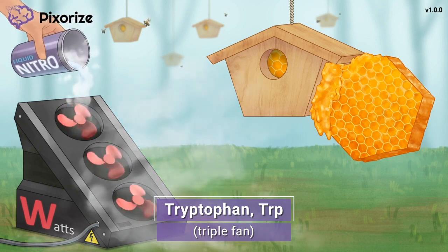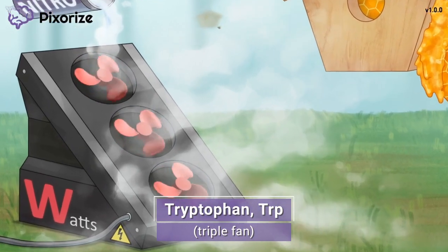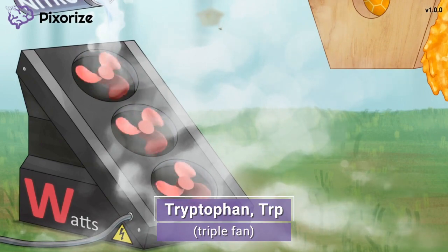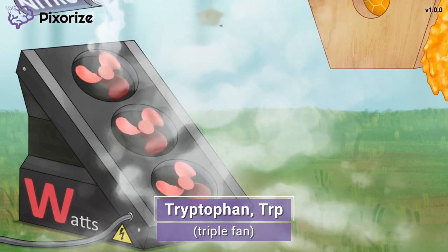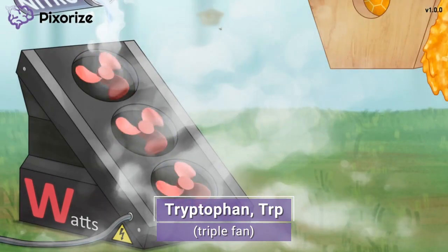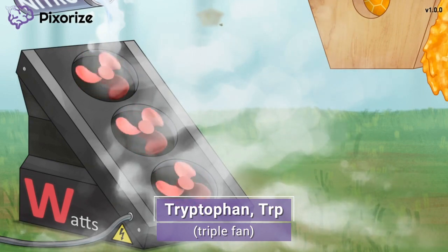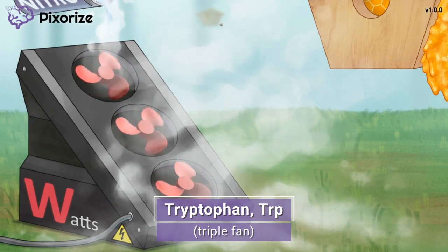Check out the fan we're using to help freeze our honeycomb. It's a triple fan system to really blow out a lot of cold air over the honeycomb. This triple fan is our symbol for tryptophan — get it? Triple fan, or tryptophan? The triple fan can also help you remember TRP, the three-letter abbreviation for tryptophan.